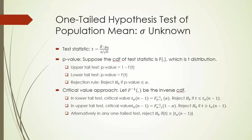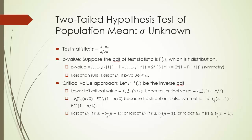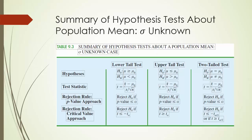If we understand hypothesis test of a population mean when population standard deviation sigma is known, it is almost the same if we test a population mean when sigma is unknown. Two differences: one, replace sigma with sample standard deviation s; two, replace normal distribution with the corresponding t-distribution with degree of freedom n minus 1, where n is our sample size as usual. The slides cover details about one-tailed test and two-tailed test of a population mean when sigma is unknown, including hypotheses, test statistic, and both rejection rules.